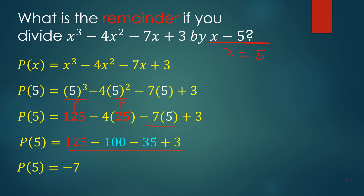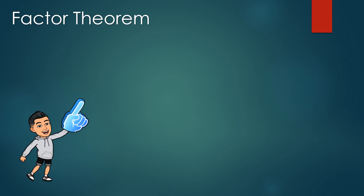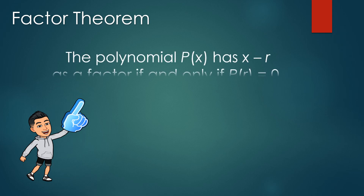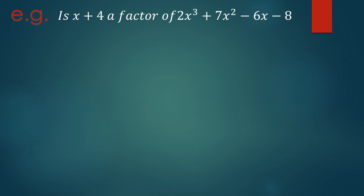Now let's look at the factor theorem. It states that the polynomial P of x has x minus r as a factor if and only if P of r equals 0. We can use this to determine if a term is a factor of a polynomial. A term is a factor when it divides the polynomial exactly with no remainder. For example, is x plus 4 a factor of 2x cubed plus 7x squared minus 6x minus 8? Let us determine this using the factor theorem.